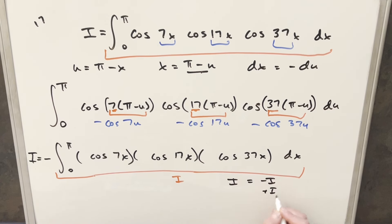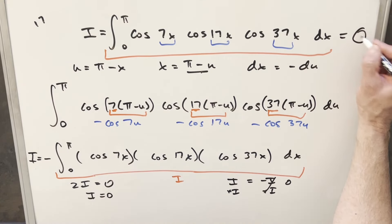We can just add an i on both sides. Then this is going to cancel. We have zero here. So we're saying 2i equals zero. But if 2i equals zero, then we know i equals zero. And so our solution for this is just zero.